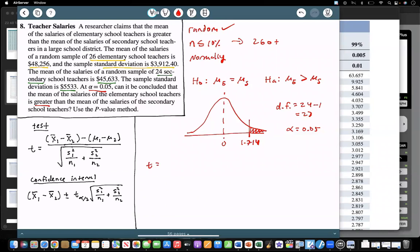So let's go ahead and calculate my test value, so my formula is here. So I subtract my sample means, so it looks like my means are 48,256, and then 45,633. Remember, we're saying our means are equal, so that'll just be 0. And then remember, each standard deviation squared over its respective sample size. So for elementary school teachers in yellow, it tells me standard deviation is 3912.40, so that squared, elementary schools are 26, and then for secondary, it's 5533 is my standard deviation squared over 24 is the sample size.